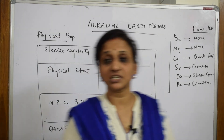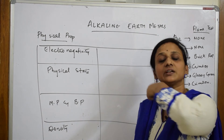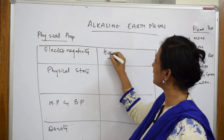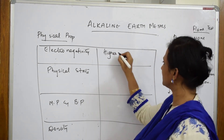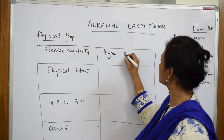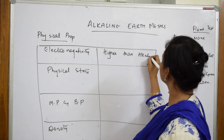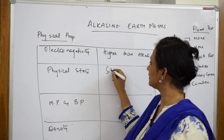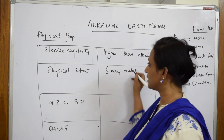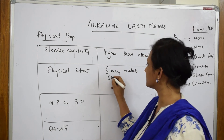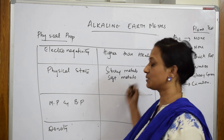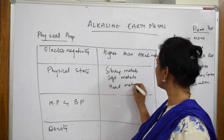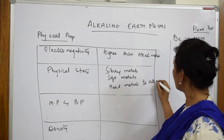For electronegativity: when the size is smaller, the ability to drag the electron pair is more, so electronegativity is higher than alkali metals because the size is smaller. Regarding physical state, all alkaline earth metals are silvery metals. They are soft metals — you can cut them with a knife — but in comparison to alkali metals, they are harder metals.